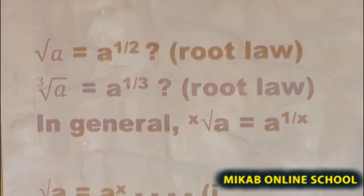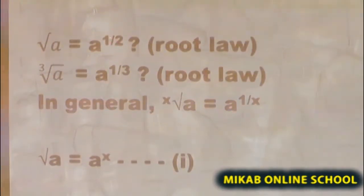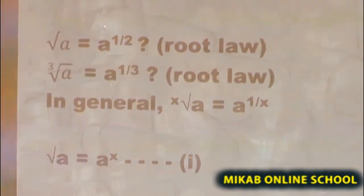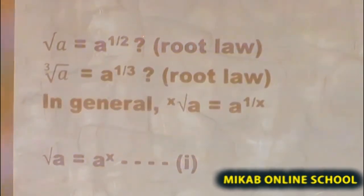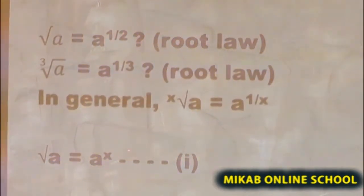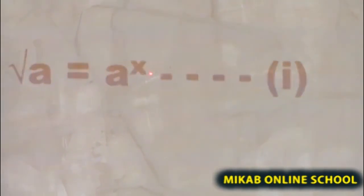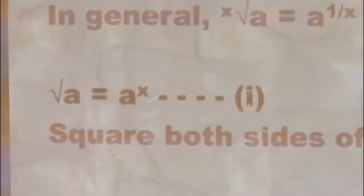We have the square root of a equal to a raised to the power of half. We might replace this half with any arbitrary value — it could be y, n, m, or any value of our choice. So we represent it as x. Therefore, the square root of a equals a raised to the power of x. That represents our equation 1.